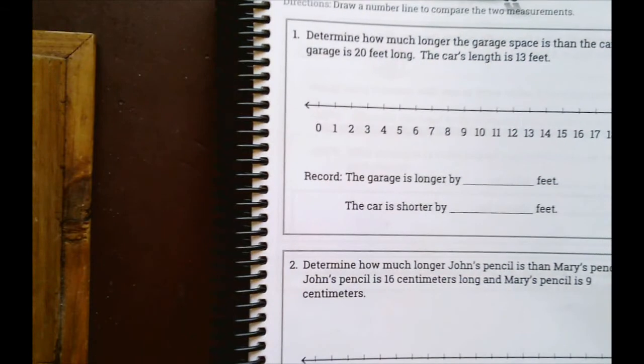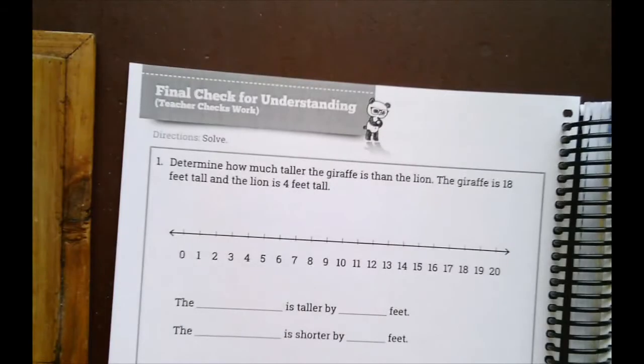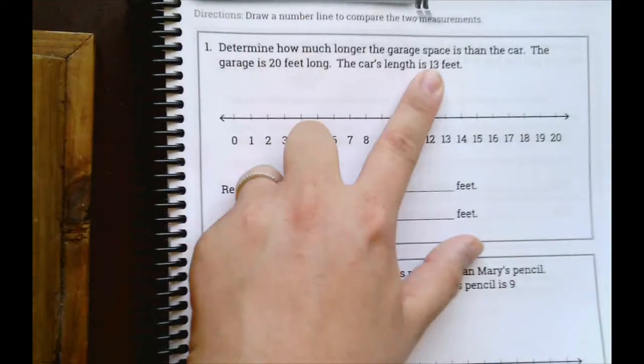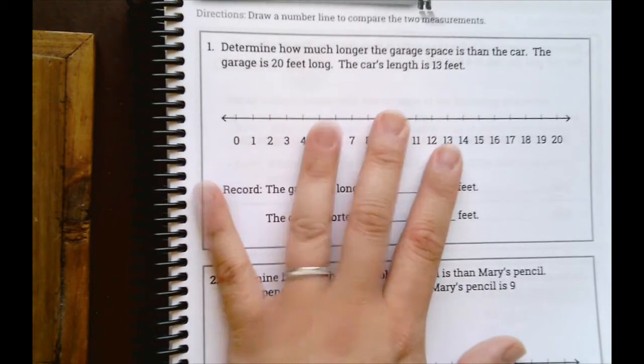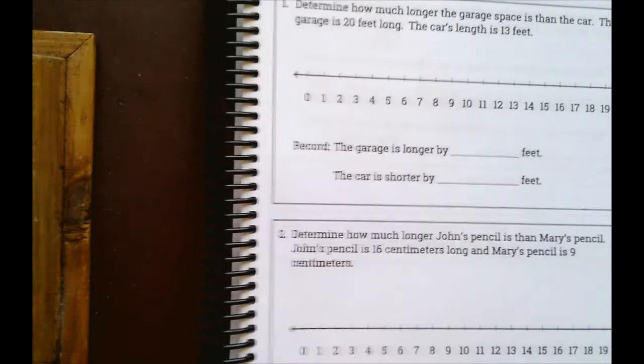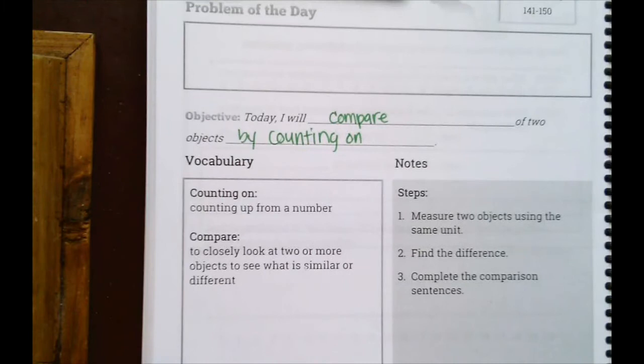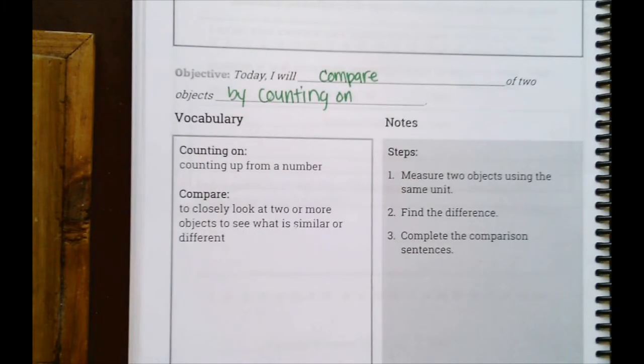All right, easy peasy. So I want you guys to get your structured guided practice done and the final check for understanding done. It's going to be the same thing. You need to identify the two objects, put them on your number line, compare them by counting on, and then plug in your numbers. Also remember we are covering Lesson 12 in today's lesson, so I'm going to go ahead and skip forward. If you want to finish Lesson 11 work first, then pause this video. Otherwise, let's continue and you can finish everything all at once.